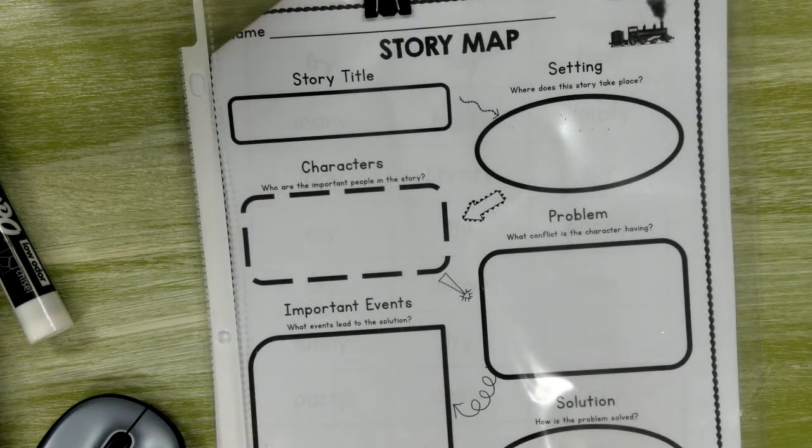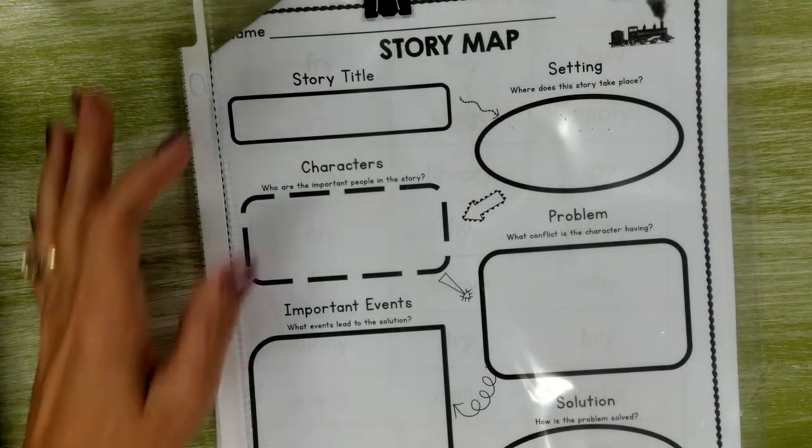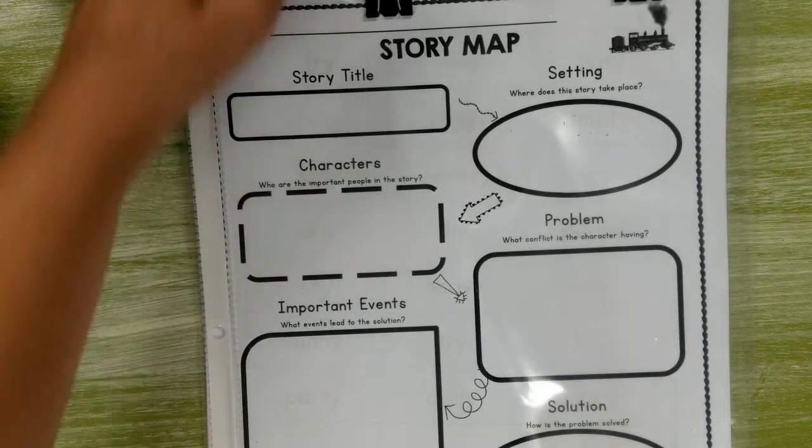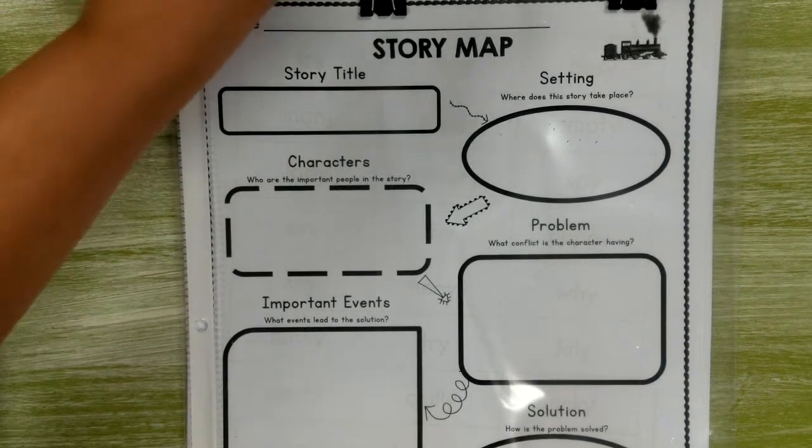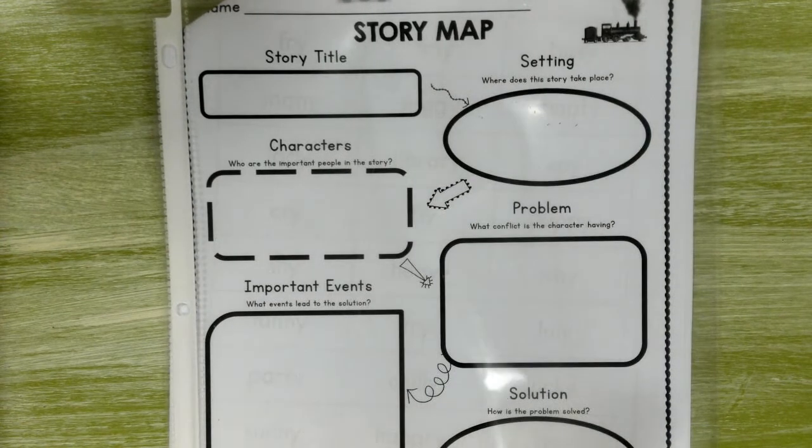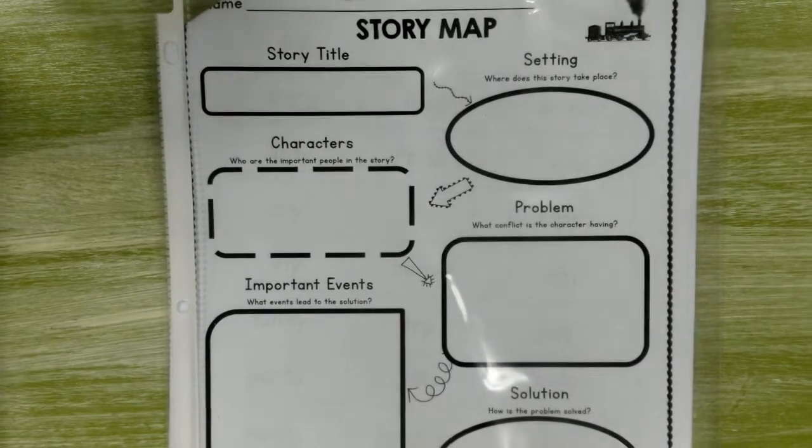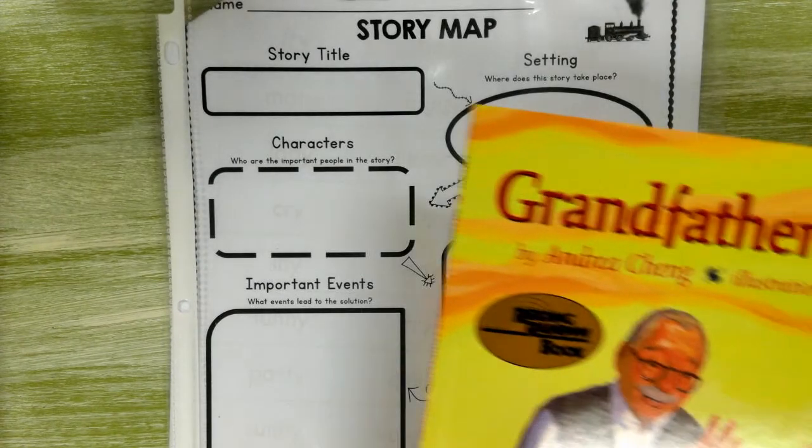Hello my most awesome second graders. I'm going to talk to you today about a story map. I know you've done one before, but this one is a little more detailed. The first section, the story title, is pretty easy. All you have to do is look on the front of the book and there it is.